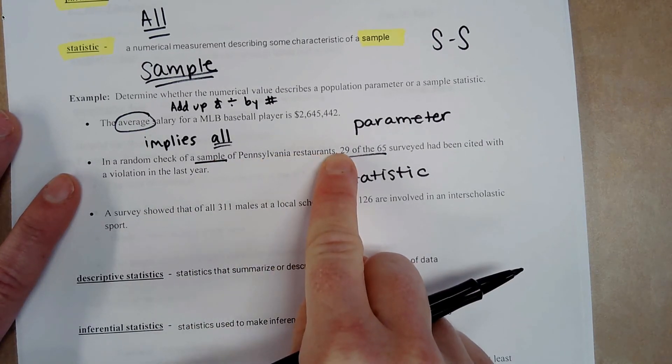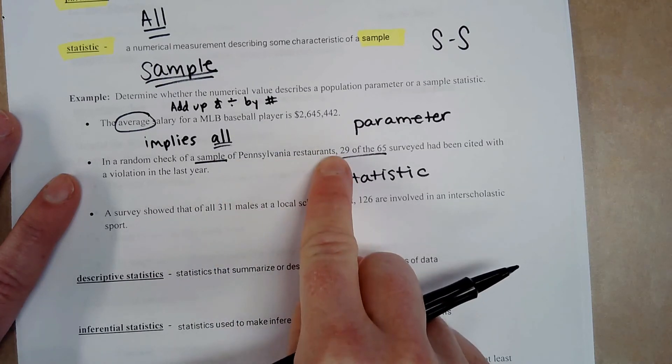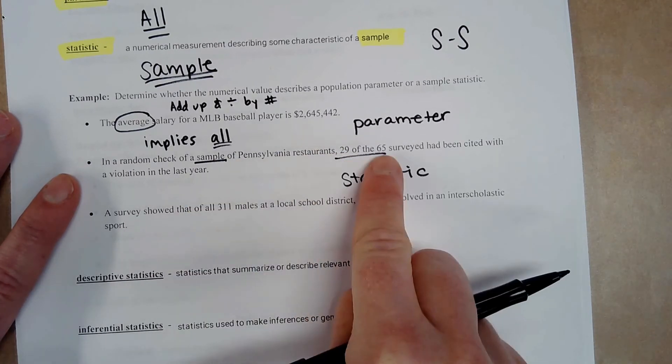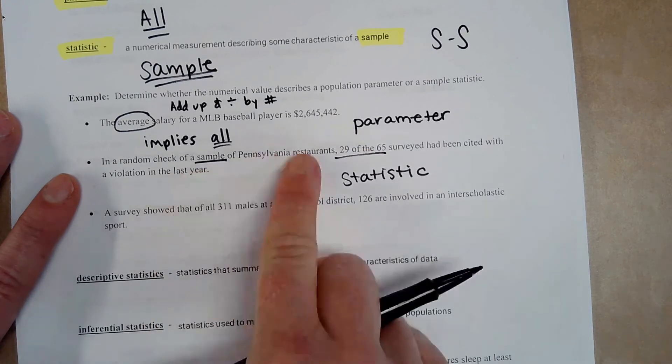And it also tells us right here, this is a sample of the restaurants. So the population would be Pennsylvania restaurants. But what we have here, this 29 out of 65, is a sample of them.